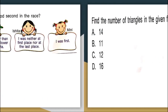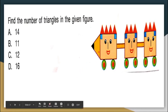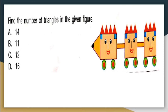Moving on to the next question: find the number of triangles in the given figure. How many triangles are there? The black triangle is the first triangle. The big yellow one is the second triangle. Then the third triangle, fourth, fifth, sixth, seven, eight, nine, ten, eleven, twelve. Totally there are twelve triangles in the given figure. The answer here is option C.